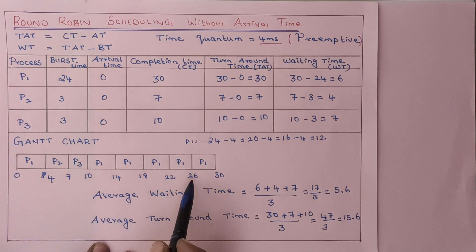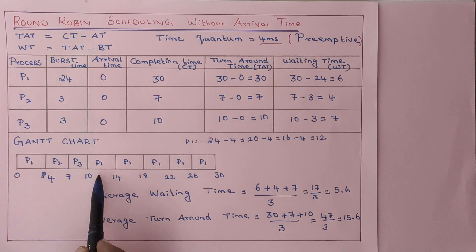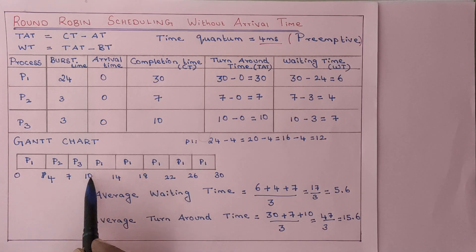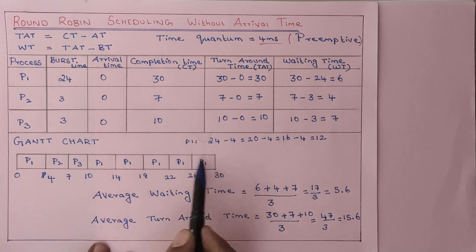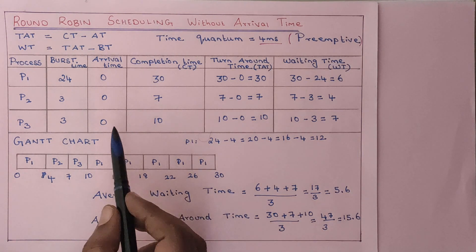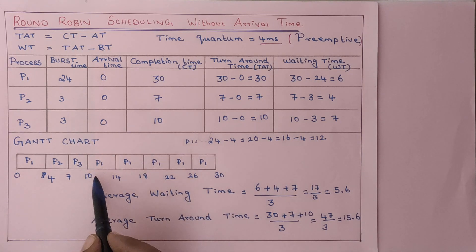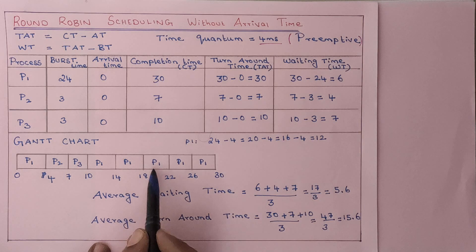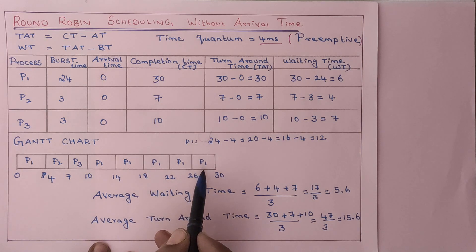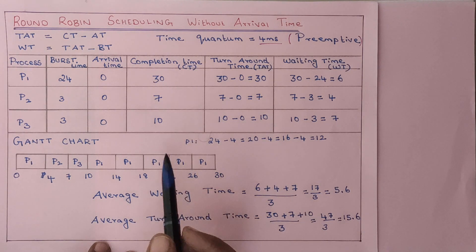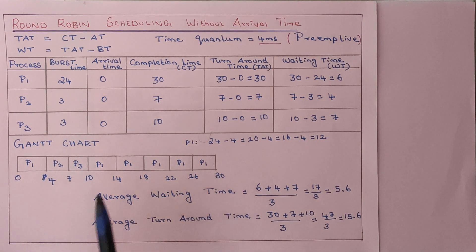The diagram is very important. Every 4-millisecond time interval, the process will preempt and then start executing again. Do not simply draw P1 from 10 to 30 directly. In this example, there are no other processes waiting, so from P1, P1, P1 — every 4 milliseconds, P1 keeps getting scheduled again. This is the way to do round robin scheduling without consideration of arrival time. Thank you.